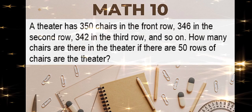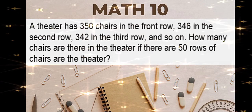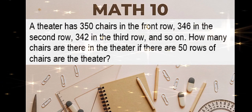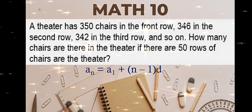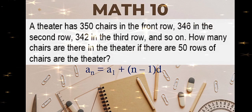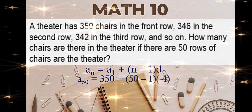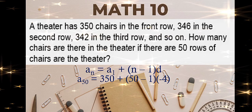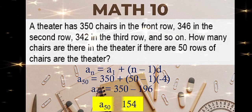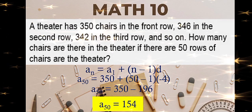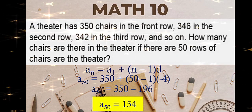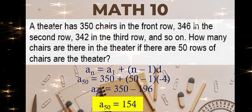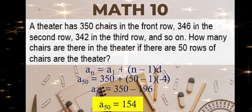Same question, but we are looking for the number of chairs if there are 50 rows in a theater. Formula: n is 50, first term is 350, the difference is negative 4. To get a sub 50, which is 154. There are 154 chairs in the last row if there are 50 rows in the theater.